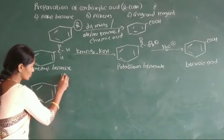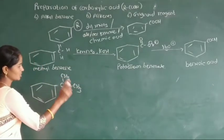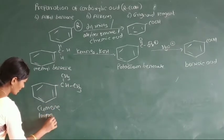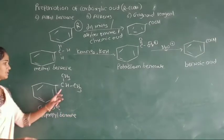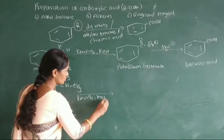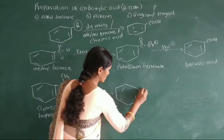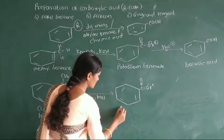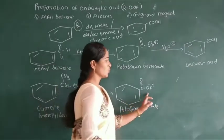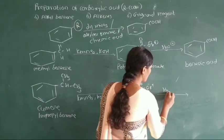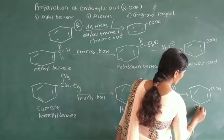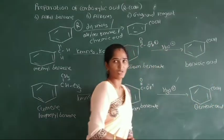Now we take a second example — benzene attached to CH, CH2, CH2. The name of this compound is isopropyl benzene. This isopropyl benzene is oxidized in the presence of KMnO4 and KOH. Here also there is formation of potassium salt of acid, and isopropyl benzene is oxidized to COOH — it is called as benzoic acid.